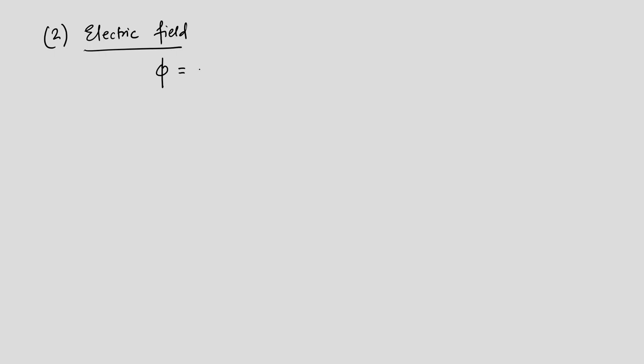The electric field enters through a scalar potential φ, just as the magnetic field enters through a vector potential. We write φ = −Ex, so E = −∇φ. Here E (script) is the energy, while E (straight) is the electric field. Keep in mind: B = ∇×A for the vector potential, while E = −∇φ for the scalar potential.